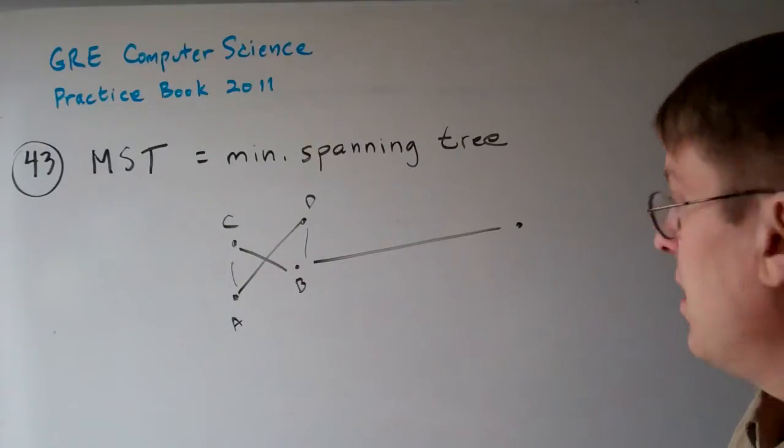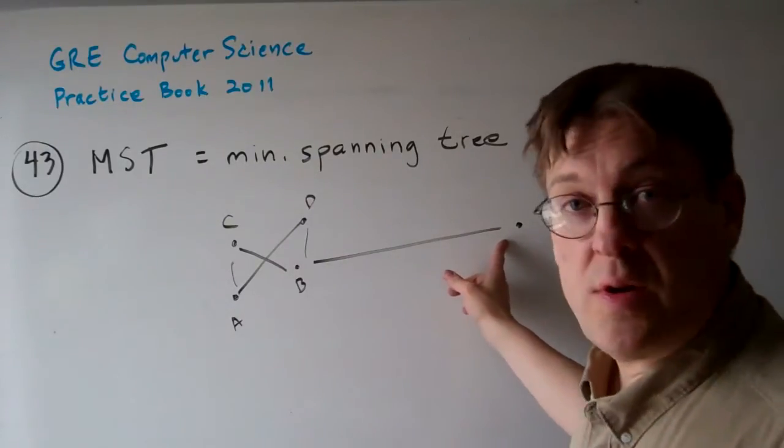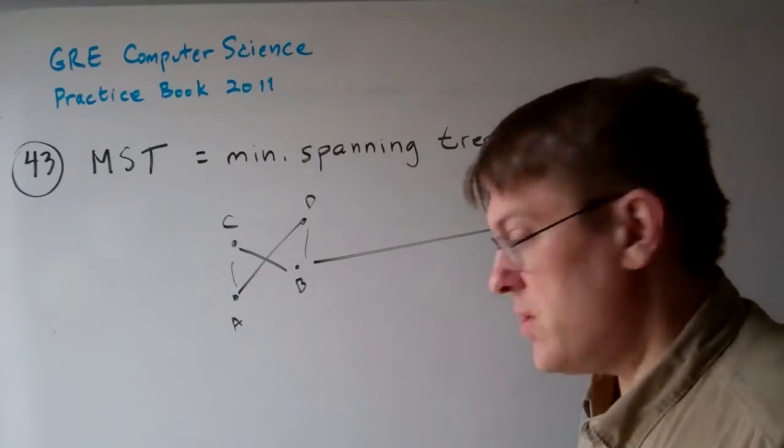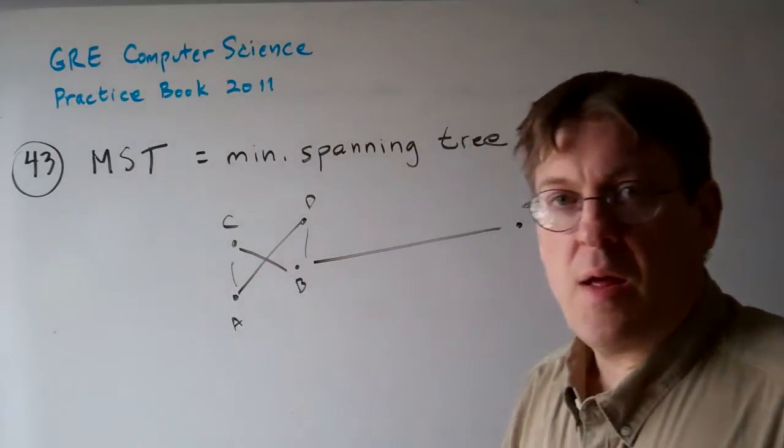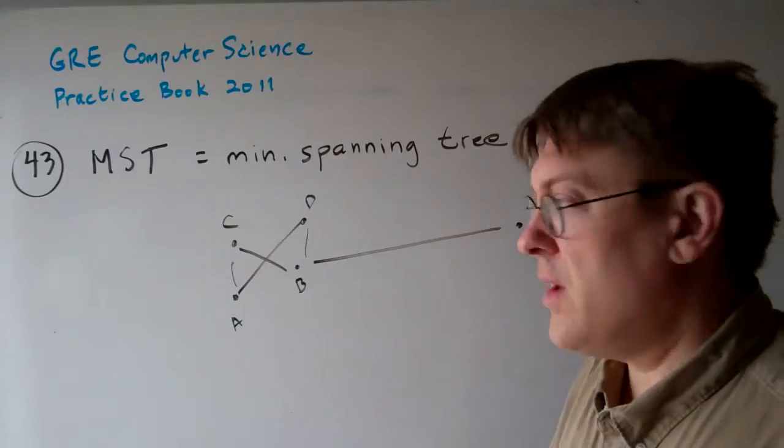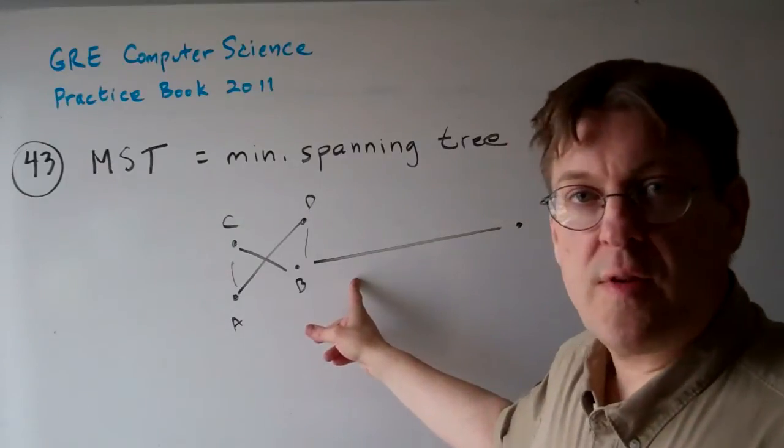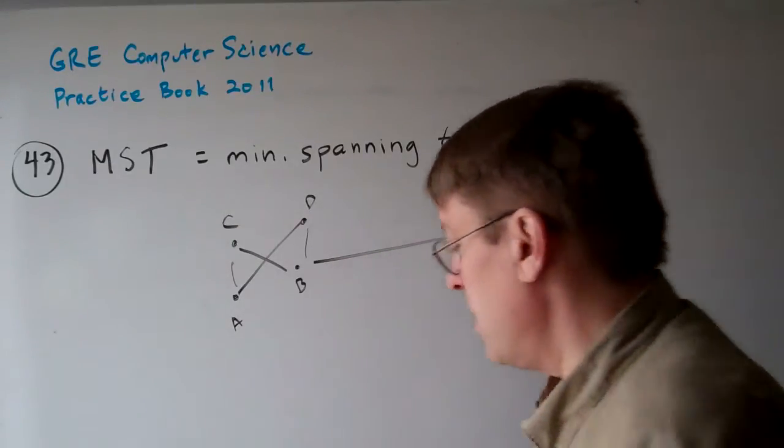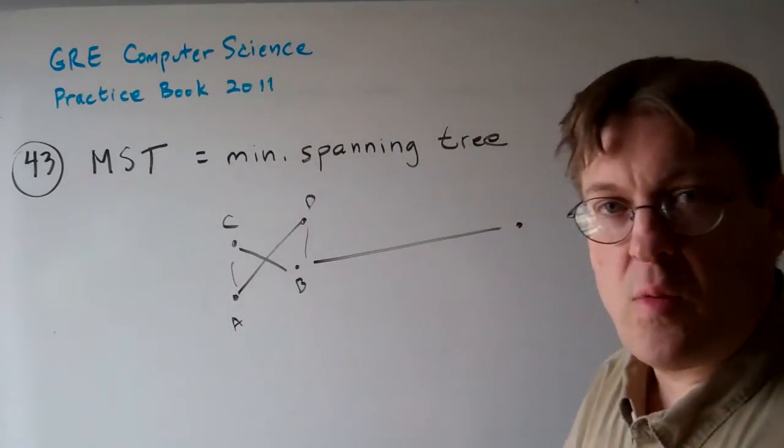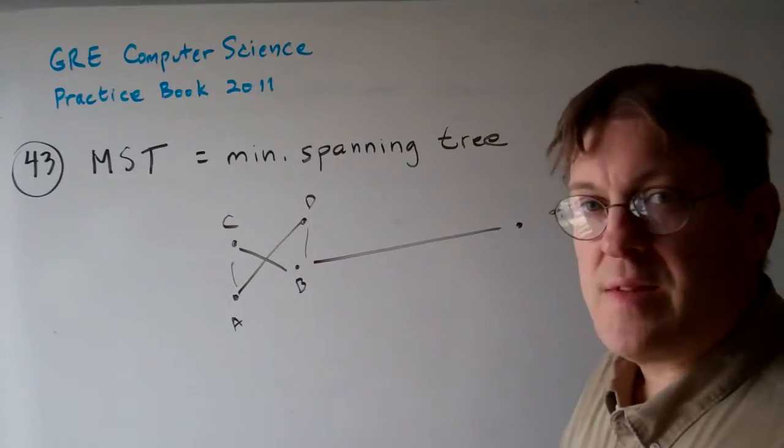We can kind of see that in order to span, a spanning tree is a set of vertices where every single node is covered, is connected. So the minimum spanning tree is the one where it is connected with the least length.